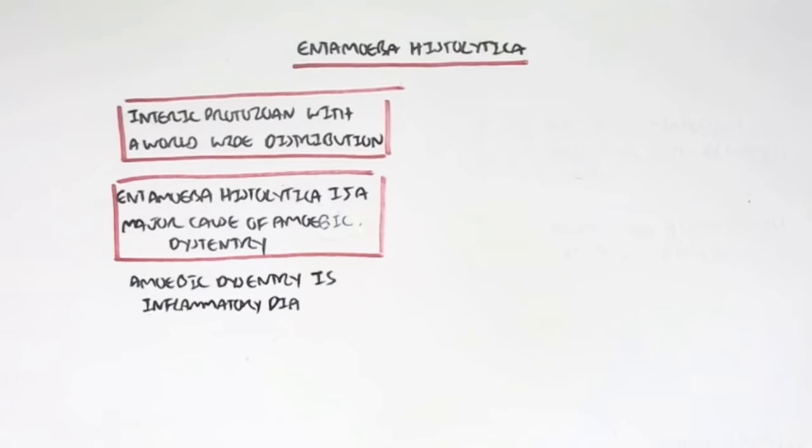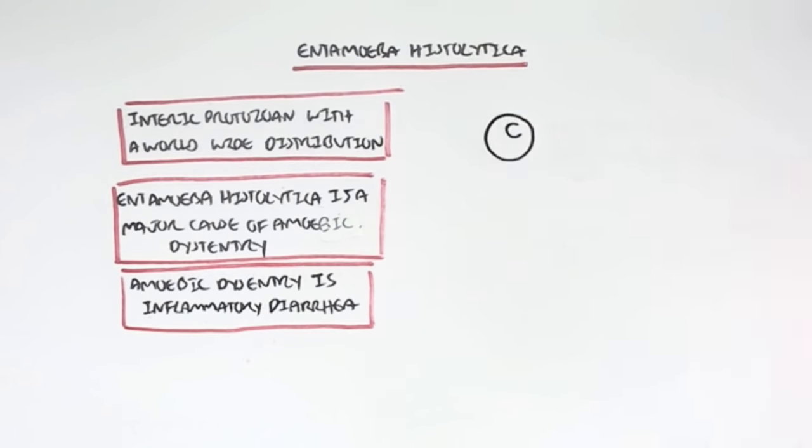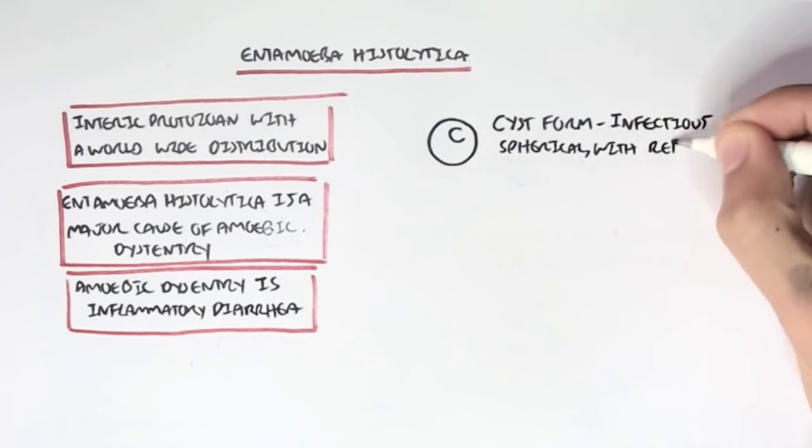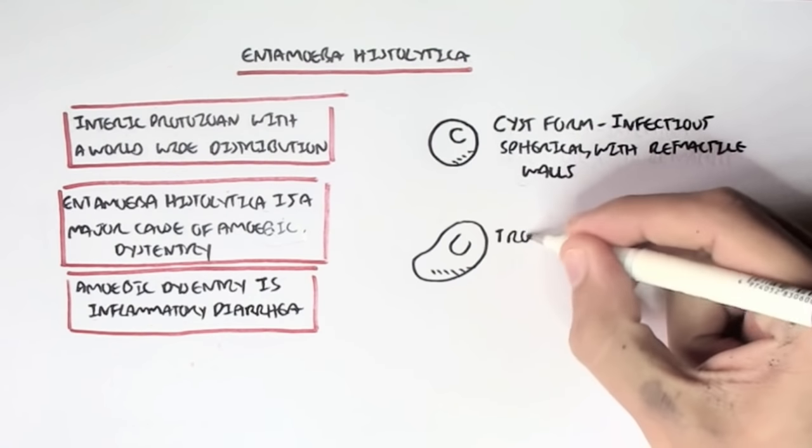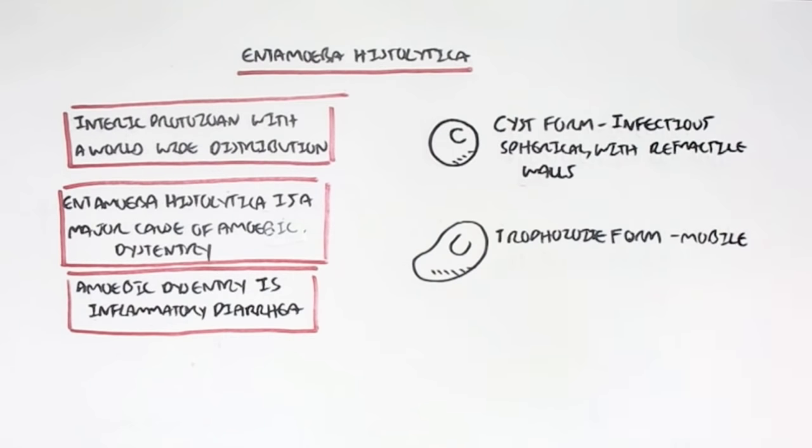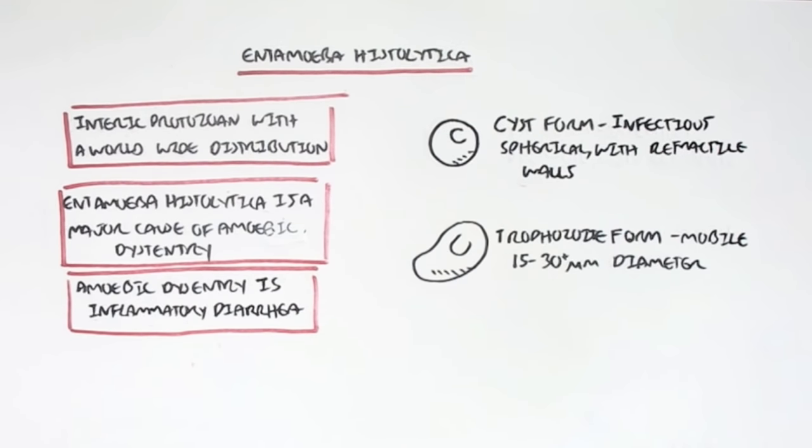Entamoeba histolytica has two main forms. One is a cyst form, which is the infective form. It is spherical in shape with refractile walls. Then we have the trophozoite form, which is the mobile form. It is about 15 to 30 micrometers and is shaped like an amoeba, hence the name.